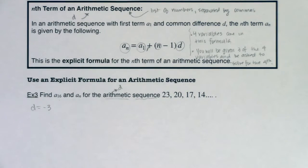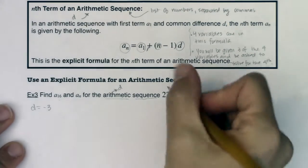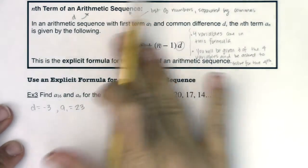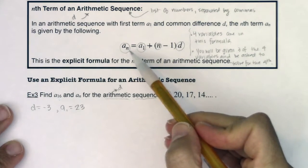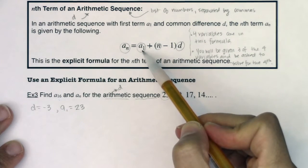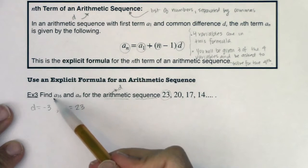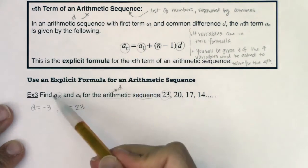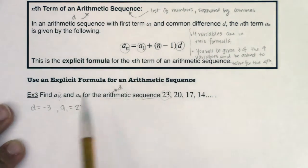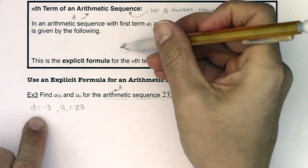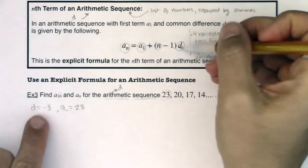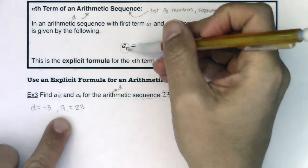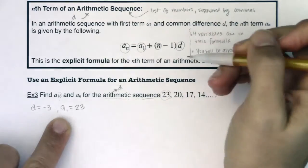It's specifically negative because these sequence numbers are decreasing. I also take note that a_1 is 23. Those are two of my four variables — d is negative 3 and a_1 is 23. They're asking for a_16, which tells me n is 16. So I know a_1, n, and d — three of the four variables — and I'm being asked to solve for the fourth.